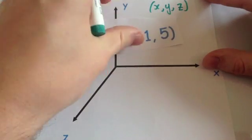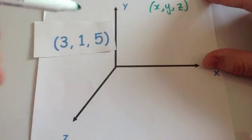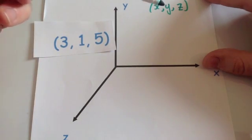So for instance, this coordinate here, 3, 1, 5, would be 3 along in the X direction, 1 along in the Y direction and 5 along in the Z direction.